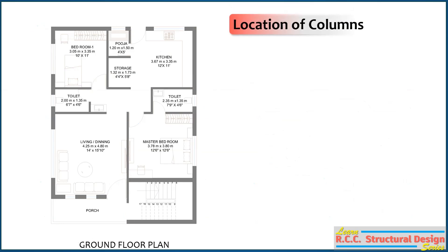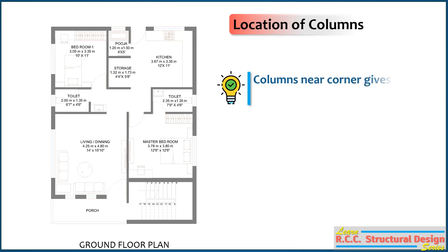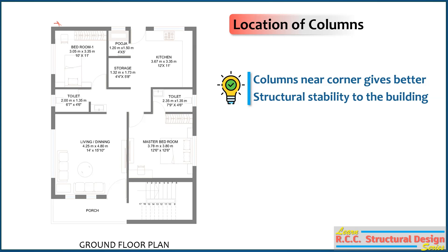Let us start with the locations of the columns. Generally, columns can be preferably located near the corners of the building for better structural stability. So we can start the column placement from the corners of this building plan.